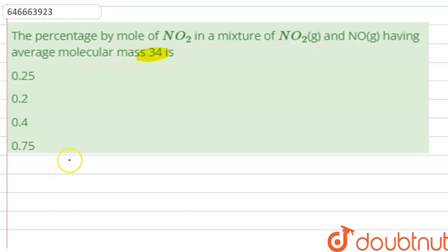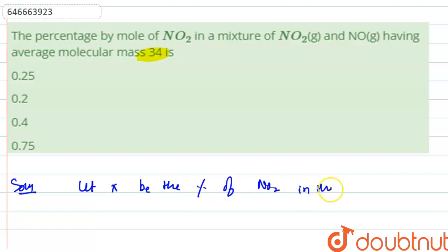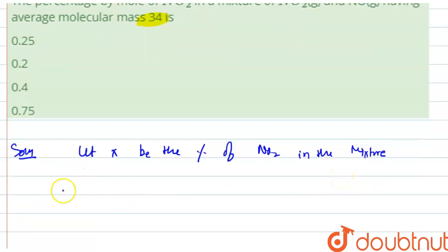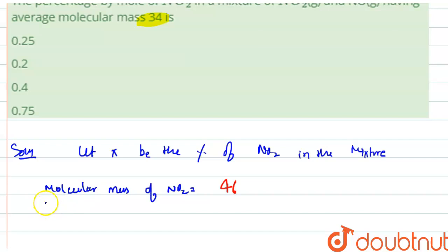Let x represent the percentage by mole of NO₂ in the mixture. The molecular mass of NO₂ is 46, and the molecular mass of NO is 30.